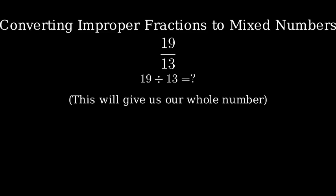To convert this to a mixed number, we need to divide 19 by 13. Let's work through this division step by step. First, let's set up our division. We're dividing 19 by 13.